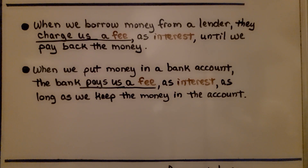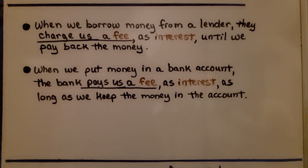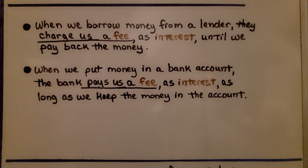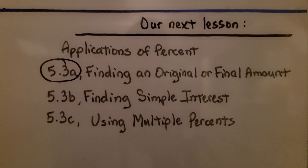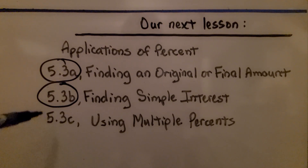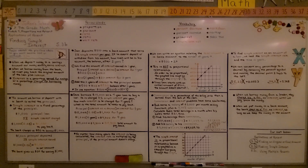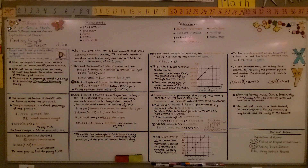When we borrow money from a bank or lender, they charge us a fee as interest until we pay back the money. When we put money in a savings account, the bank pays us a fee as interest as long as we keep the money there. Remember: convert the percentage simple interest rate to a decimal, multiply it by the principal to get interest for one year, and remember you need both the simple interest rate and the time in years.